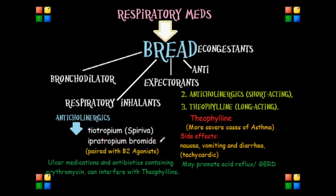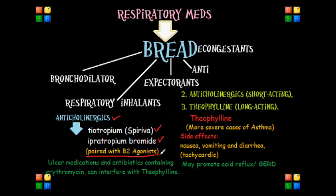Now let's look at anticholinergics as a bronchodilator relative to respiratory diseases. Some examples you will most likely encounter on the NCLEX include tiotropium (Spiriva) and ipratropium bromide. Tiotropium is a long-acting anticholinergic bronchodilator used specifically in the management of COPD, and is available as an inhalant only. Ipratropium bromide is used in the treatment of both asthma and COPD, and is most efficiently paired with a short-acting B2 agonist.